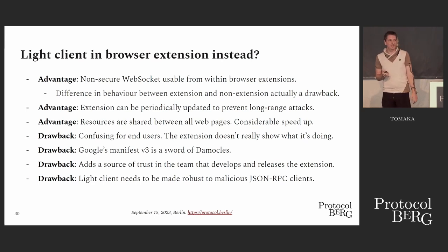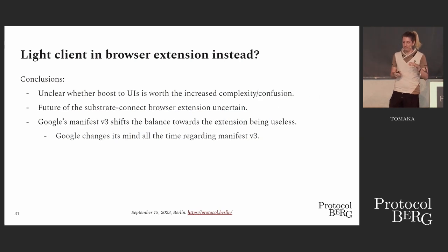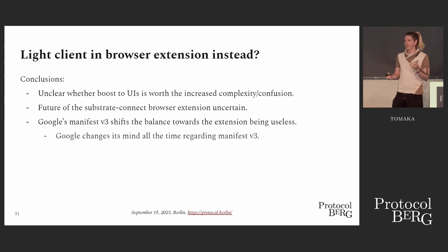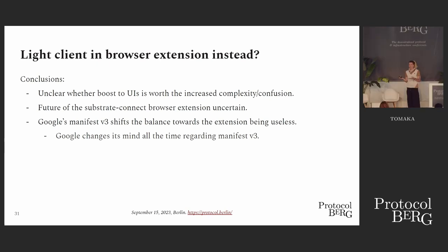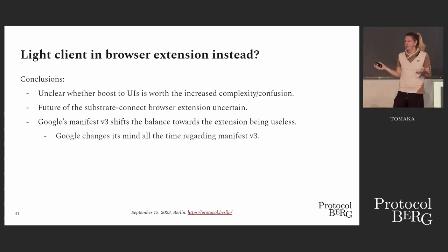Google Manifest V3 is the main reason this extension is kind of deprecated. It's an update to the extension API, and version 3 would completely forbid light client use cases — you couldn't run a long-running background process anymore. Depending on Google's changing opinions and public pressure, we don't know what to do with this extension. So, thank you, Google.